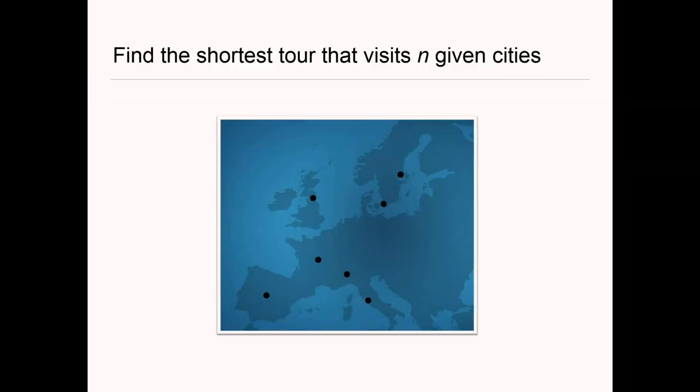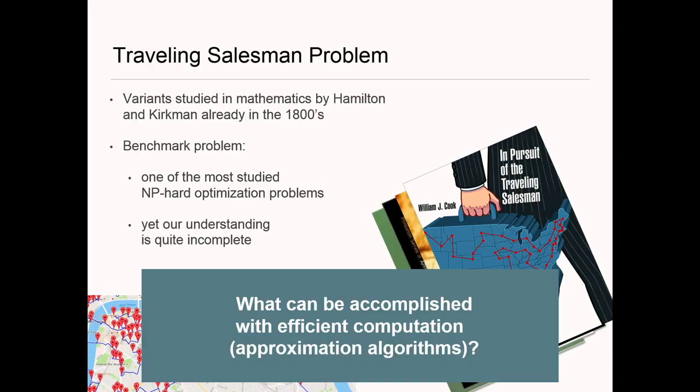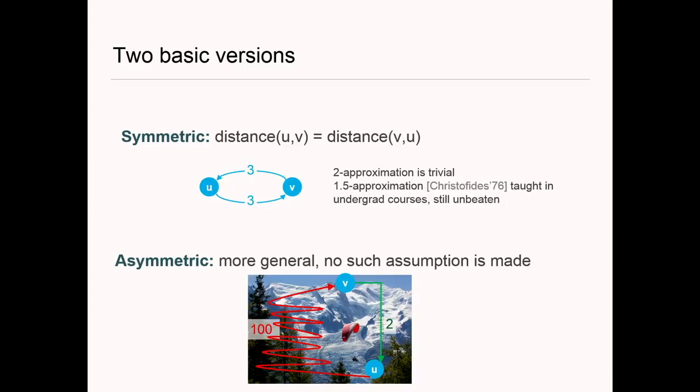More generally, in the Traveling Salesman Problem we're given a graph with cities and pairwise distances and want to find the shortest tour of these cities. This has been studied since the 19th century by Hamilton and Kirkman — you probably know the term Hamiltonian path. It's a benchmark problem in computer science and approximation algorithms, one of the most studied NP-hard optimization problems, but our understanding of it in terms of approximation ratios is quite incomplete.